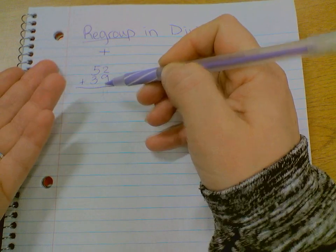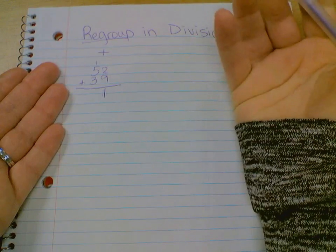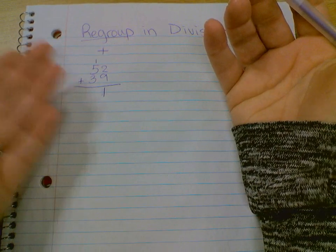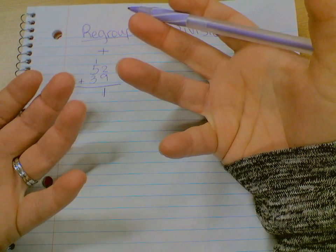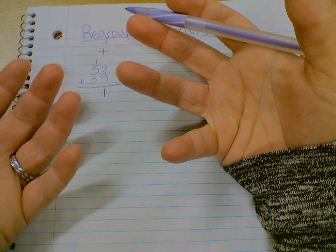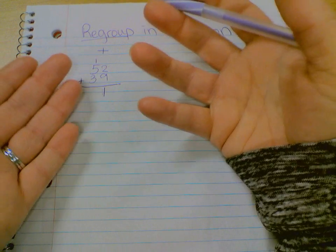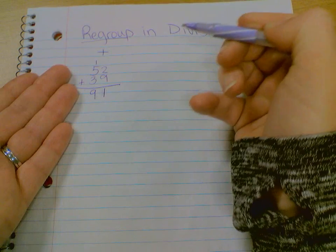It's what we call regrouping. We call it carrying, carry to the next place, carry to the next column. That's regrouping though. It's when you have to carry a tens over to the next place, or carry ones over to the next place, carry hundreds, whatever it might be. That's regrouping. So in addition, that's regrouping.